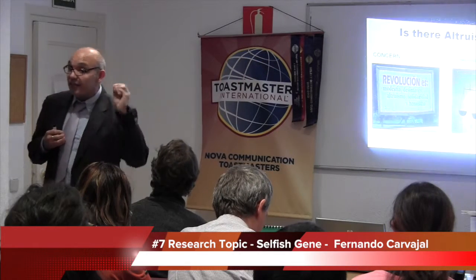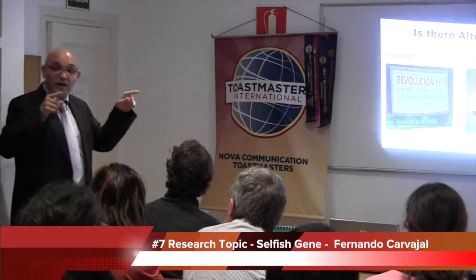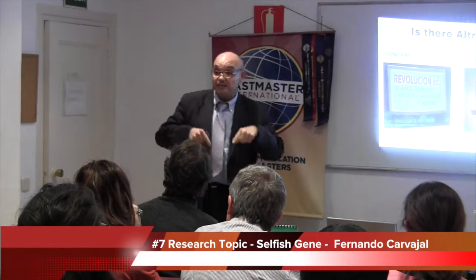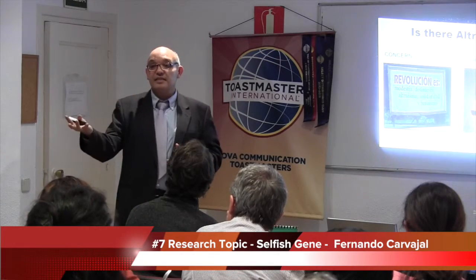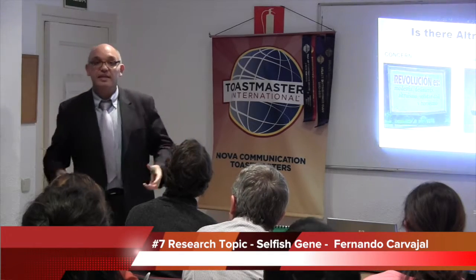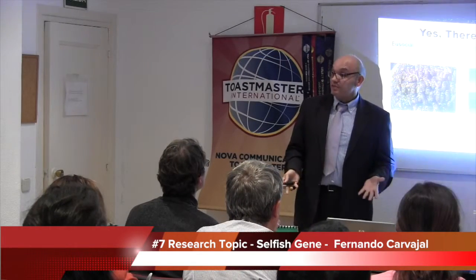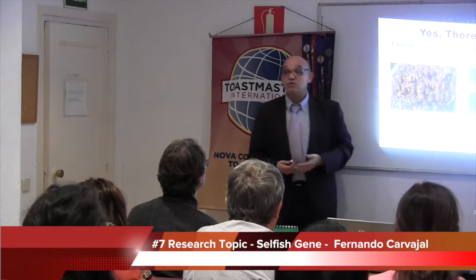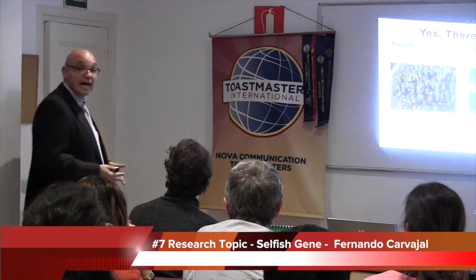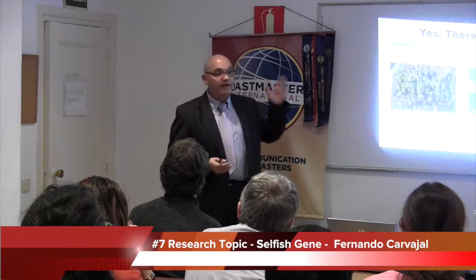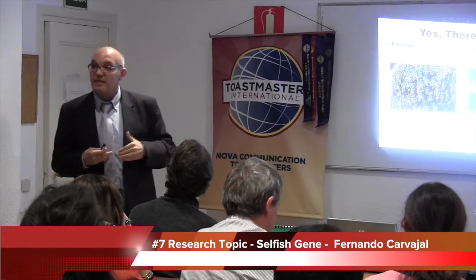Richard Dawkins said that you are altruistic or selfish depending on the environment that your genes are immersed in, and they behave depending on whether that behavior increases or decreases the chances of survival. Is there altruism? Yes, there is — like in eusocial animals such as bees and ants. A bee can sting you and then die because they are not prepared for stinging. This is an intraspecies example that Dawkins resolved.